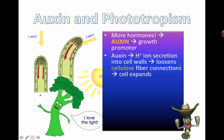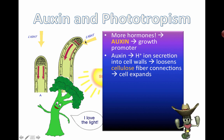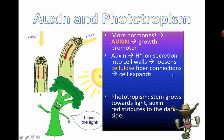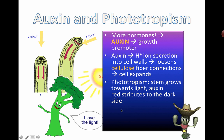If you switch the light source to the other side, the plant will start growing back in that direction — and you can predict which side the auxin will accumulate on. This is an example of a tropism, and in this case it's phototropism. 'Photo' means light, and a tropism shows a particular direction of growth or response. So in phototropism, stems grow toward the light, with auxin redistributing to the dark side.